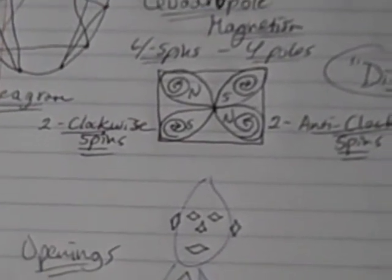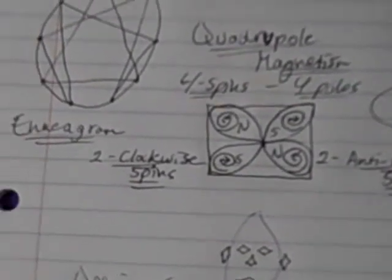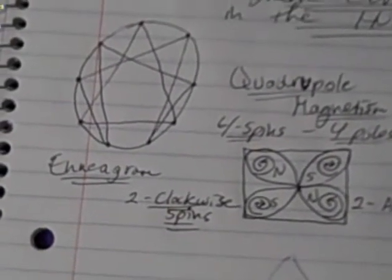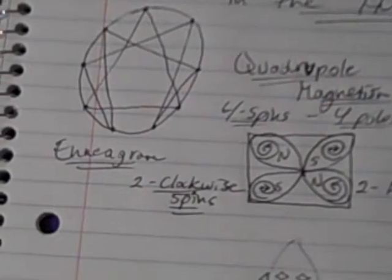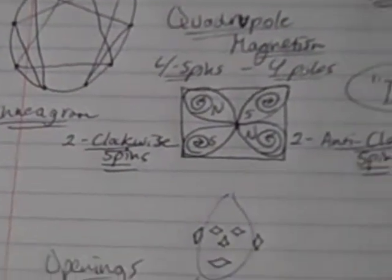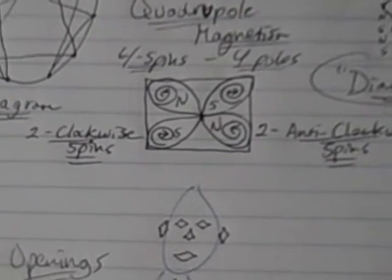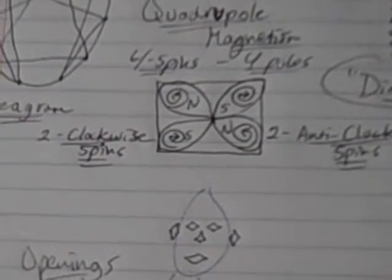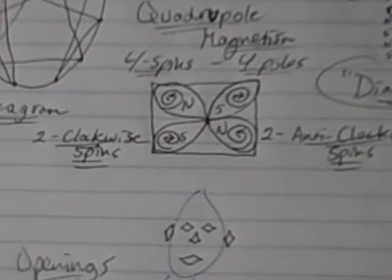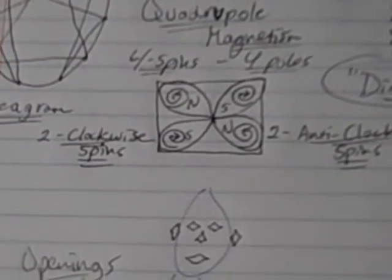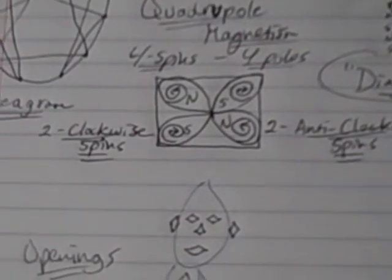When you take all these spins and map them out on a grid three-dimensionally, you can map out not only the whole human being but every structure in nature. What you end up with is the enneagram pattern of Gurdjieff. These basic theories are derived from Albert Roy Davis and Walter C. Rawls and their theories of magnetic spins, as well as Howard Johnson and his diagrams.